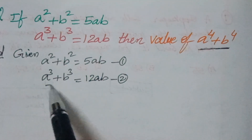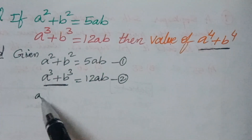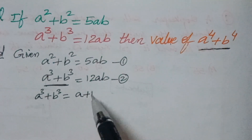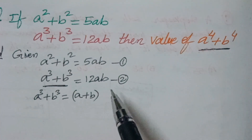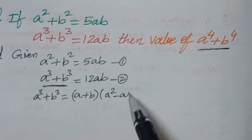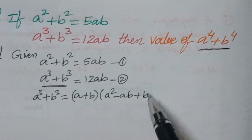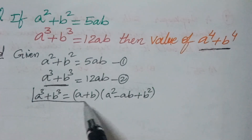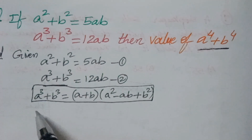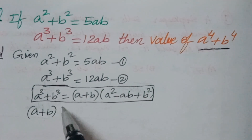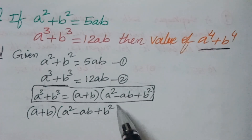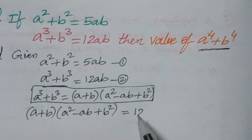From the second equation, we can apply the factoring identity: a cubed plus b cubed equals (a plus b)(a squared minus ab plus b squared). So, we write (a plus b)(a squared minus ab plus b squared) equals 12ab. We use this formula to get the solution.